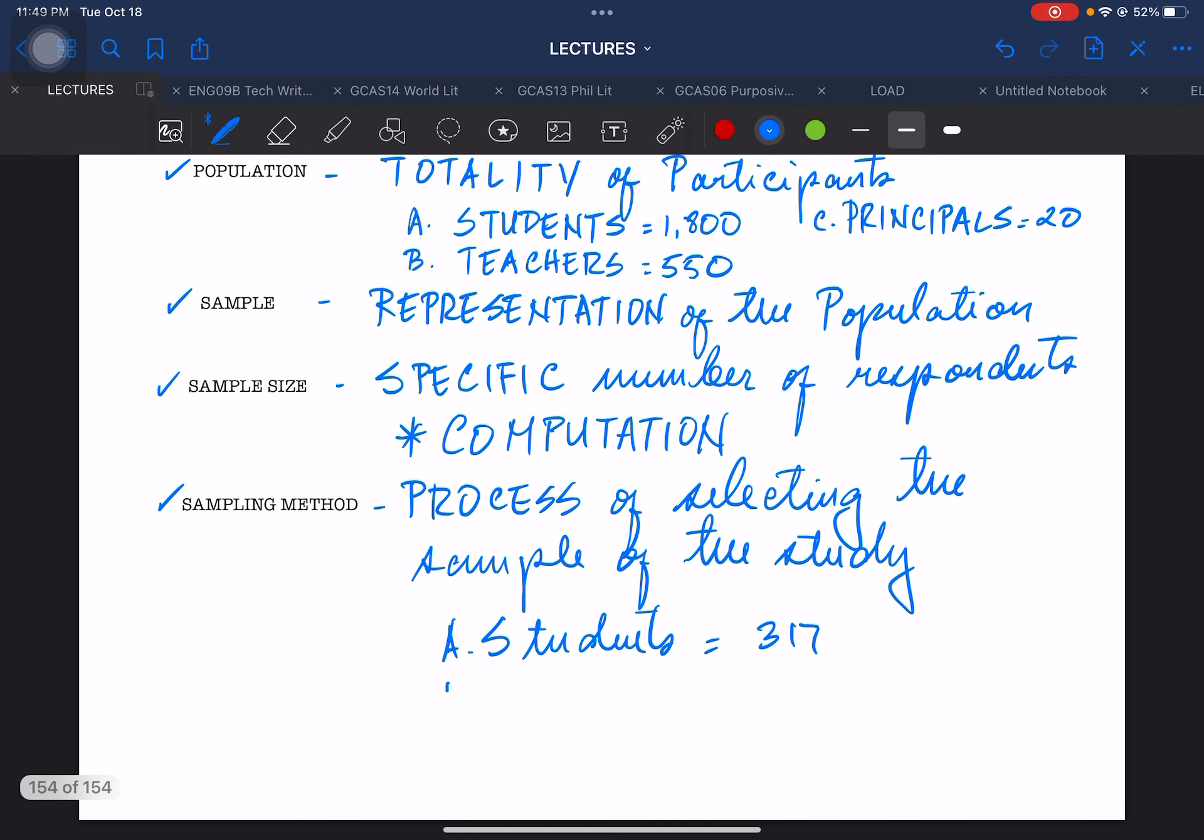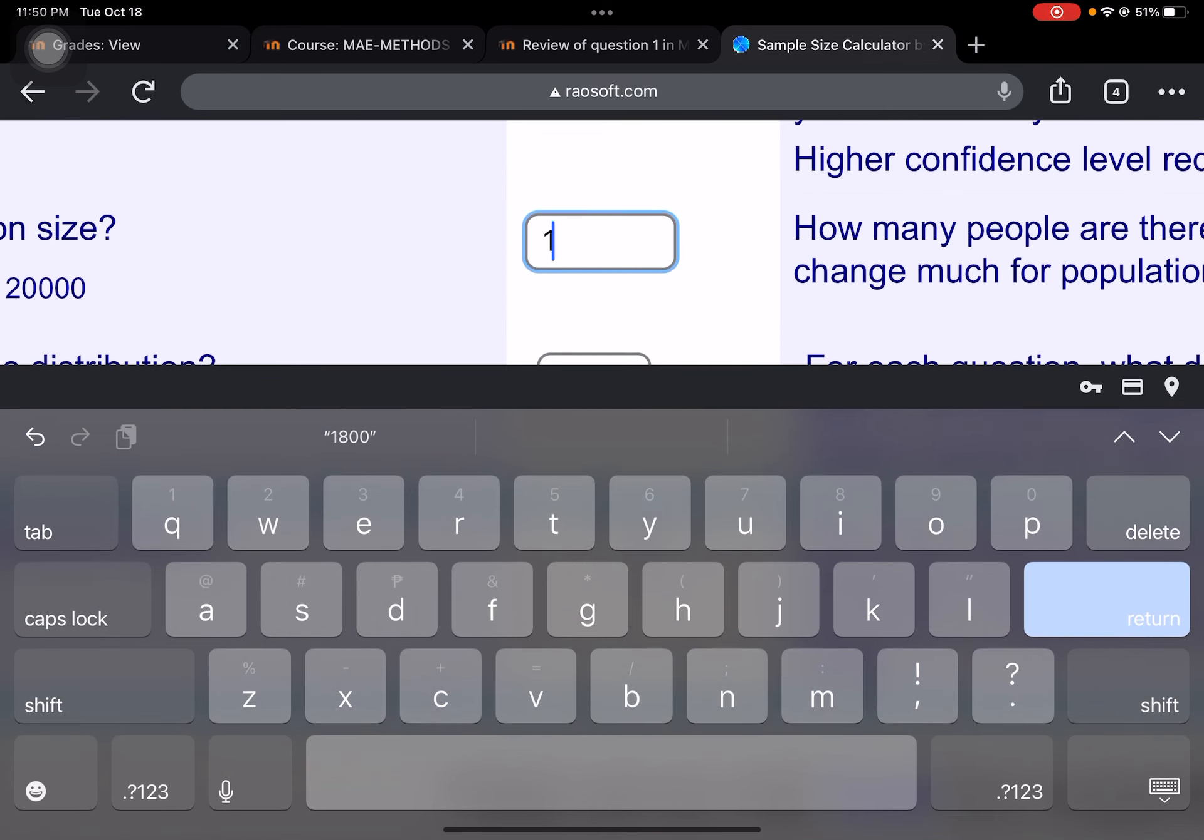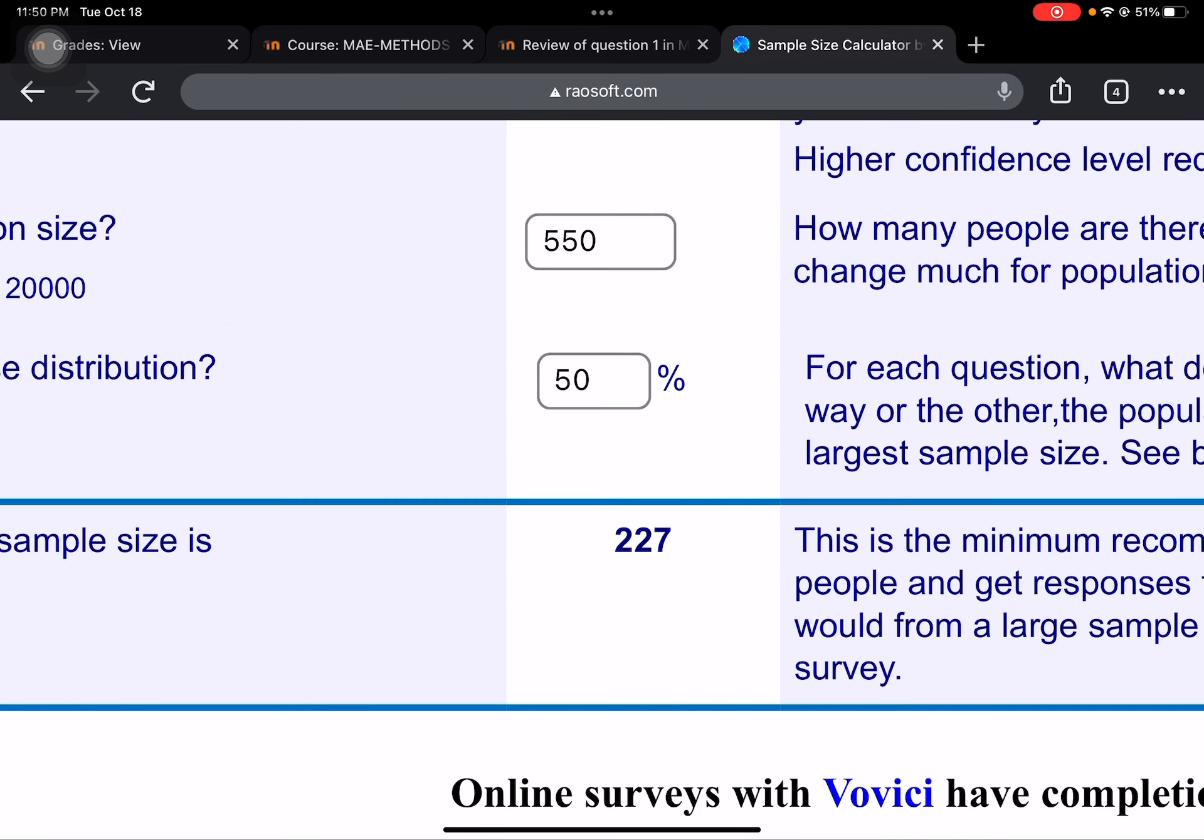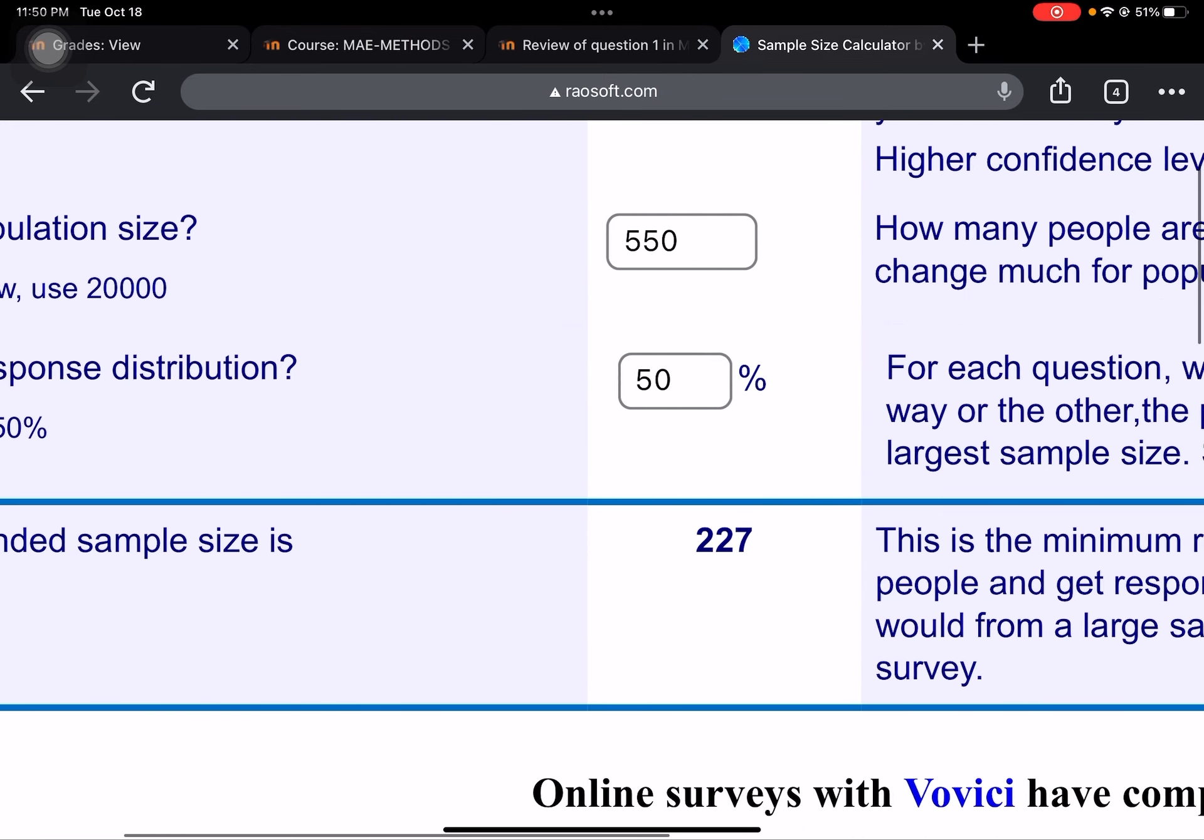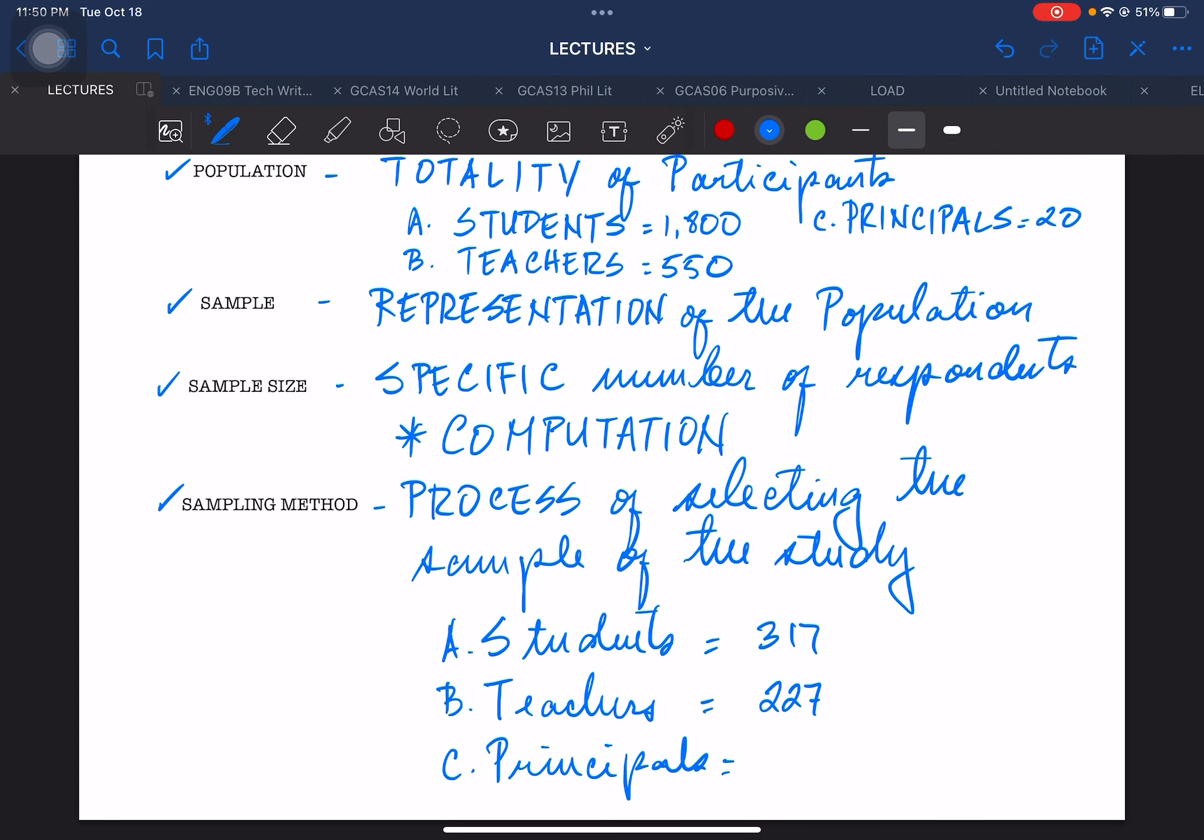And then, the next one is if we are going to use teachers and the total population of teachers is 550, ilagay na natin yung sa principles. So, teachers are set at 550 for their population. So, let's use that and enter the value 550, enter and then immediately you're going to see the recommended sample size which is 227. So, what do you observe? The lower the value of the population, the higher the sample that you need.